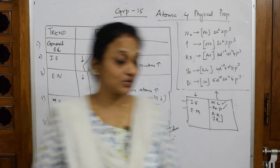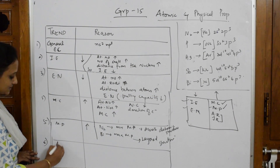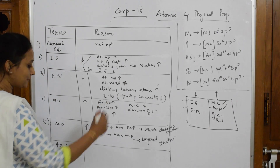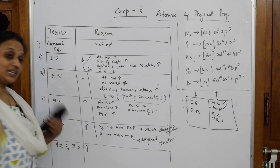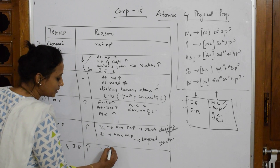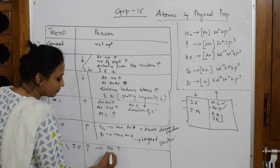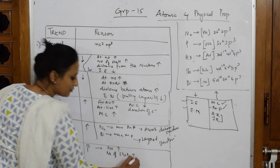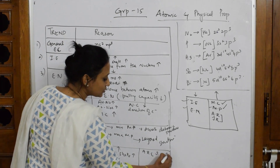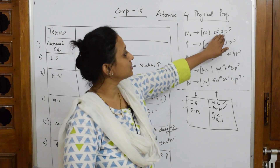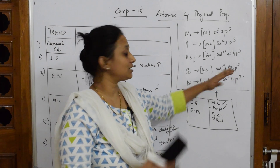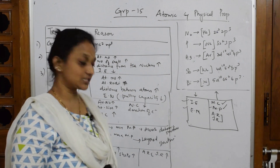Atomic and ionic radii — expressed collectively as covalent radii — increase as we go down the group. The reason: as atomic number increases, the number of shells increases, and automatically your atomic radii and ionic radii also increase down the group. Each successive element adds one more shell, so the atomic radius keeps expanding from nitrogen down to bismuth.